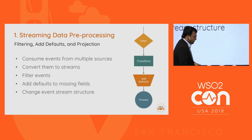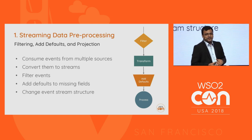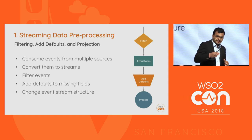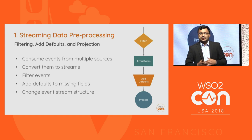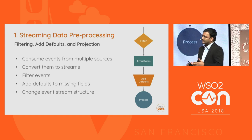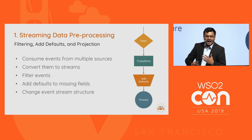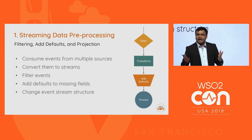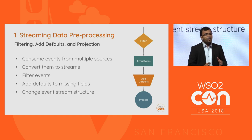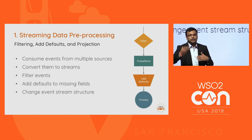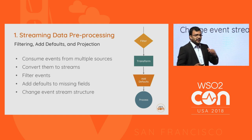The first pattern we're going to discuss is streaming data pre-processing. In streaming data pre-processing, there are a few phases: first, consume events from multiple sources; second, convert them into streams and filter those streams based on conditions; third, add defaults or missing fields; and finally, format incoming events and change the event structure to convert it into another structure.